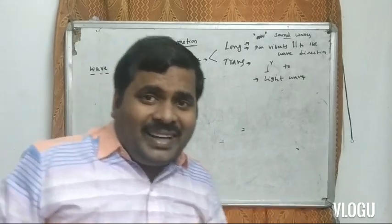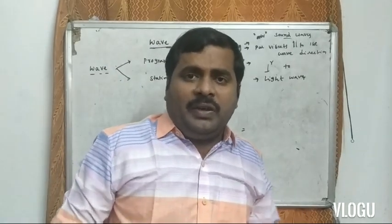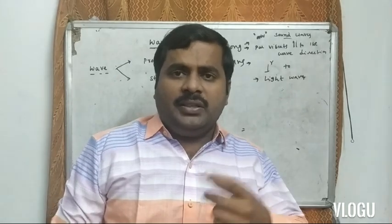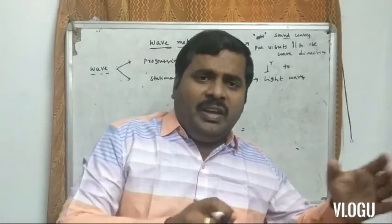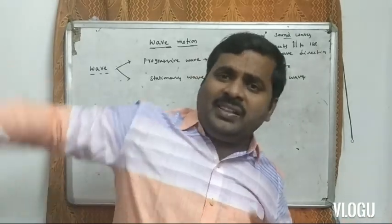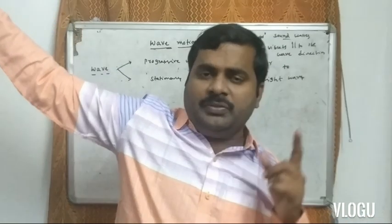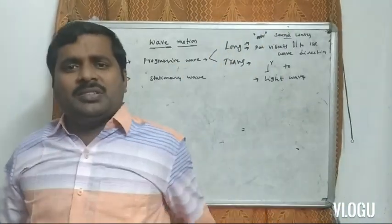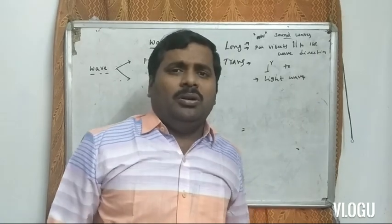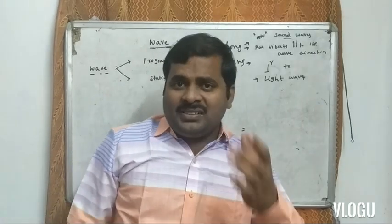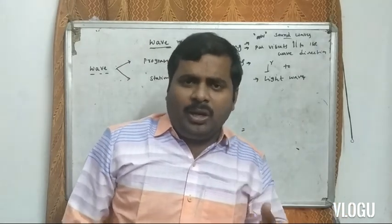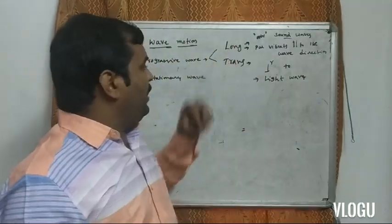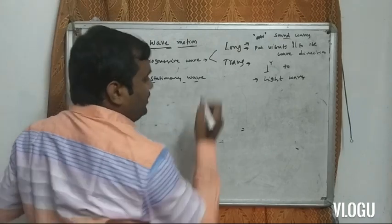So, to recap: the disturbance created in a medium is nothing but a wave. Waves are two types — stationary wave and progressive wave. A progressive wave starts from one point and travels an infinite distance. Progressive waves are two types: transverse wave, where particles vibrate perpendicular to the wave direction, and longitudinal wave, where particles vibrate parallel to the wave direction.